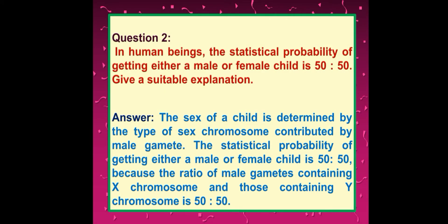In human beings, the statistical probability of getting either a male or female child is 50:50. The sex of a child is determined by the type of sex chromosome contributed by the male gamete. The probability is 50:50 because the ratio of male gametes containing X chromosome and those containing Y chromosome is 50:50.